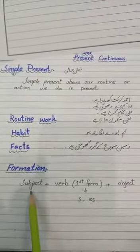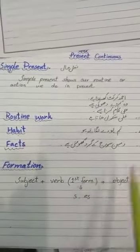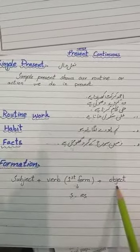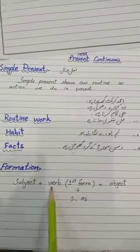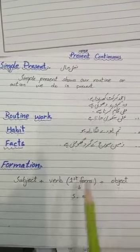Formation is: subject plus verb first form, then object. Now, in some cases we add 's' or 'es' to the first form of the verb. With whom do we use this?